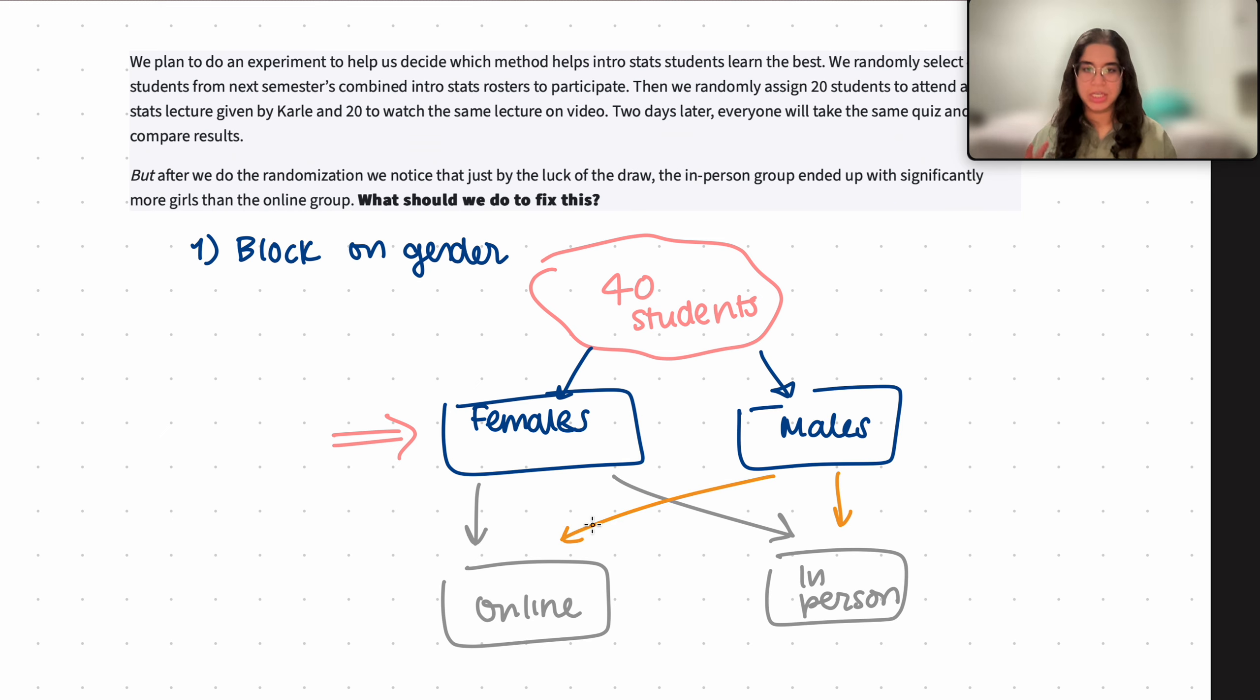So what we're doing here is our males and females, all of our genders, are basically equally split among the online and in-person groups. So we don't have the problem of having, for example, too many females in the online group and too little females in-person.